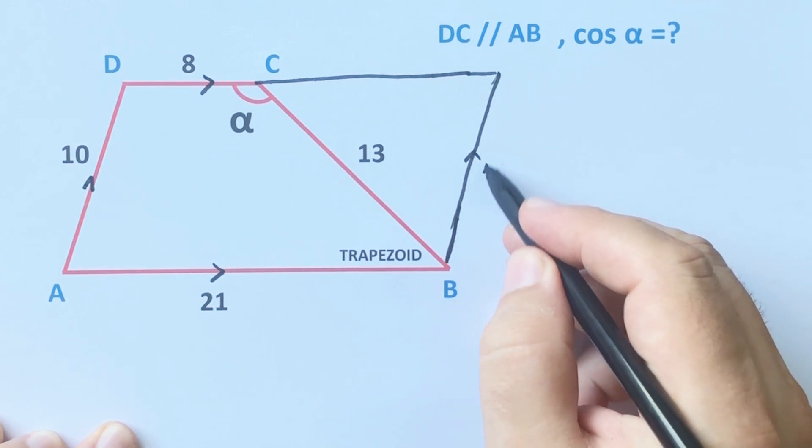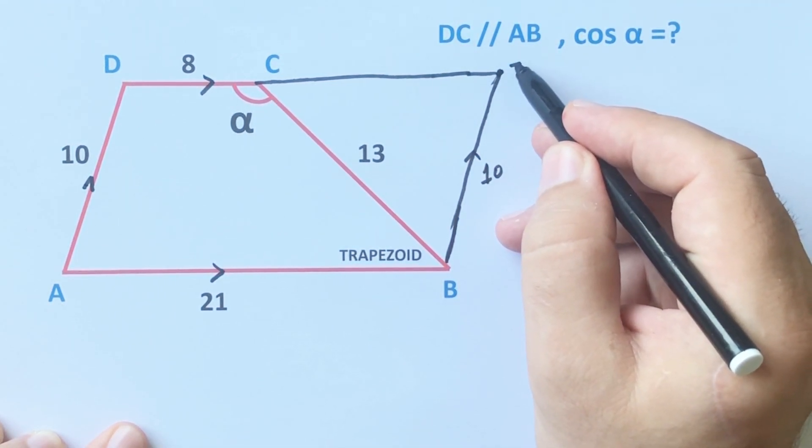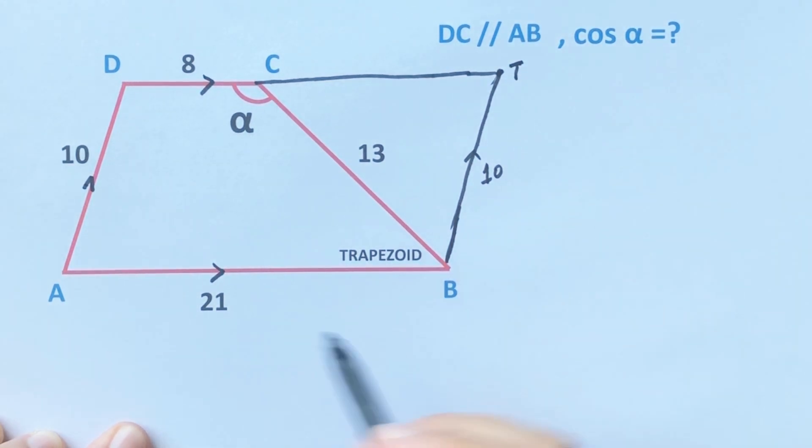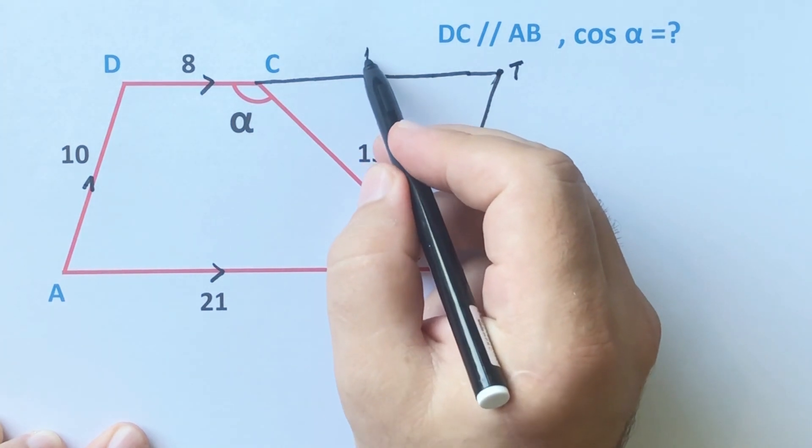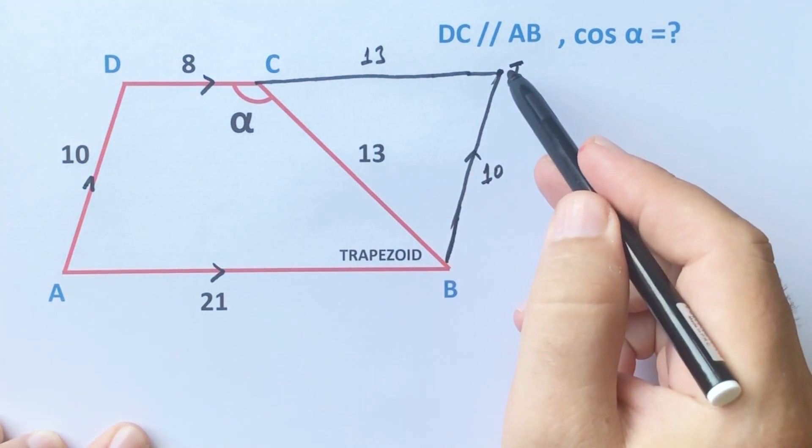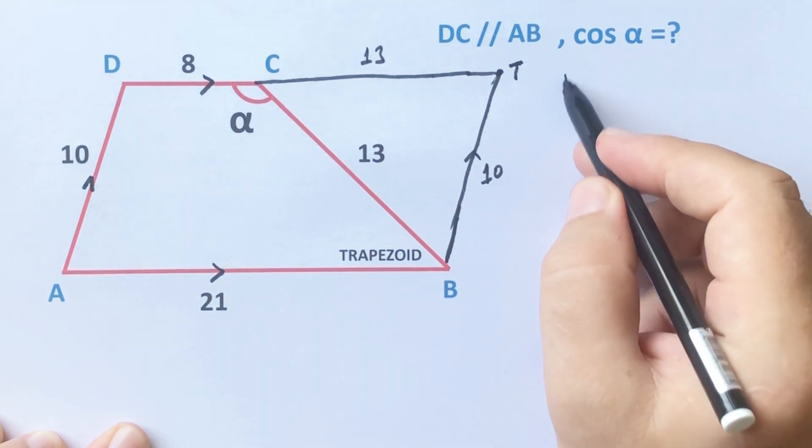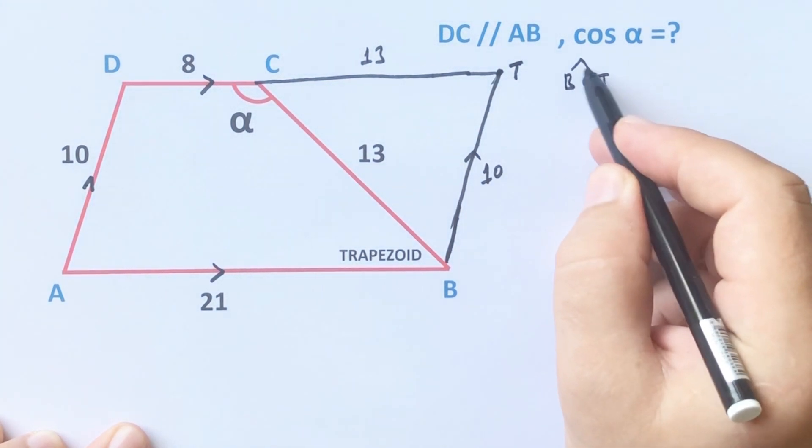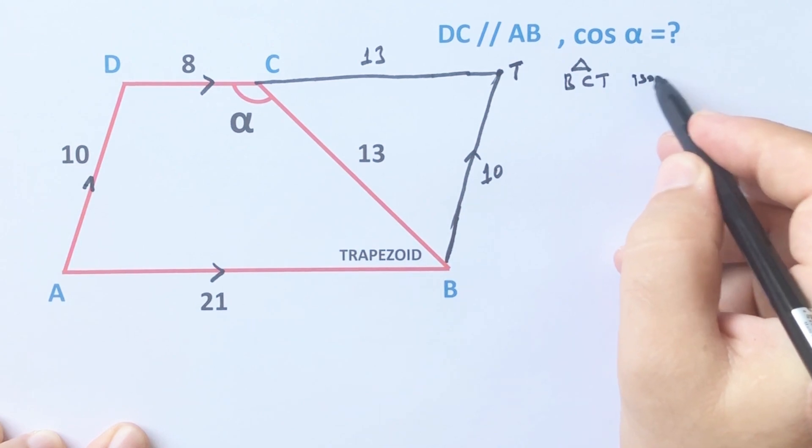Right, so this length must be 10 units and let's call here T. If it is 21, this length must be 13 units, so we get an isosceles triangle. BCT triangle is an isosceles triangle, right.